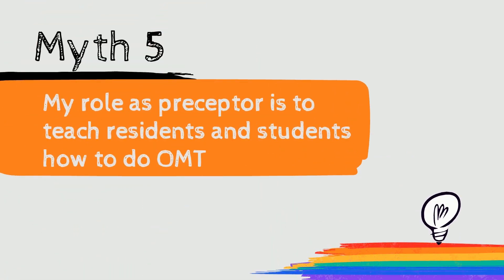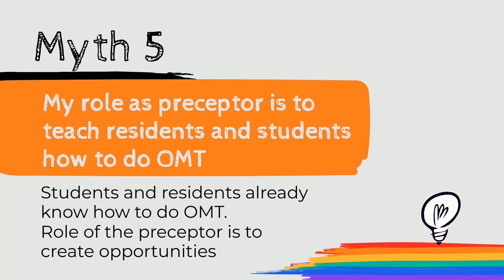Myth 5: My role as preceptor is to teach residents and students how to do OMT. Fact: OMT is unique among medical procedures, as osteopathic medical schools spend 200 to 300 hours training, assessing, and verifying minimal competence of their students by the end of their second year. MDs entering an osteopathically recognized program must also provide proof that they are minimally competent at OMT. Therefore, these students and residents already know how to do OMT at a competent level. The primary role of the preceptor is to create opportunities for residents and students to use a skill they already have.